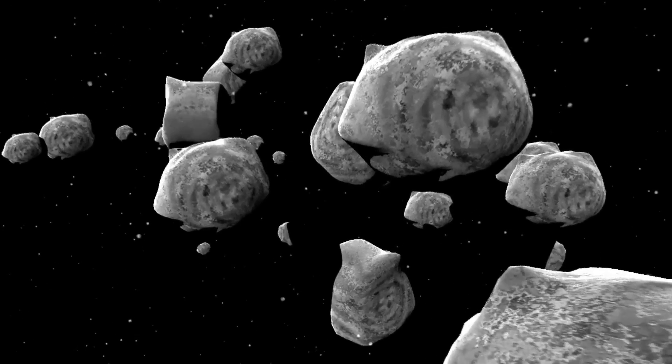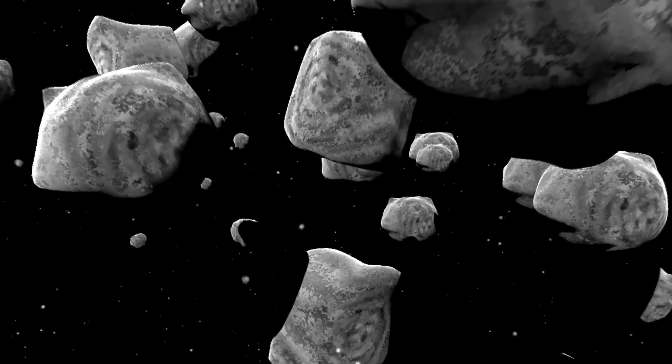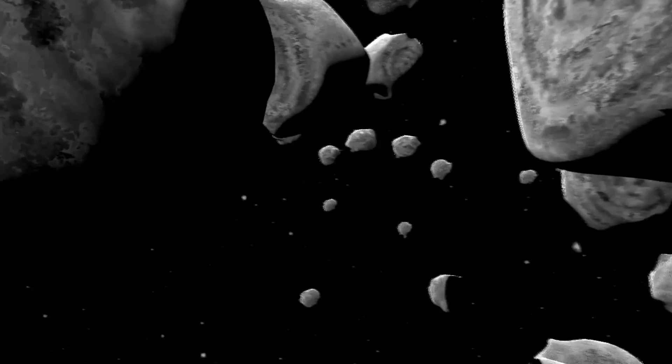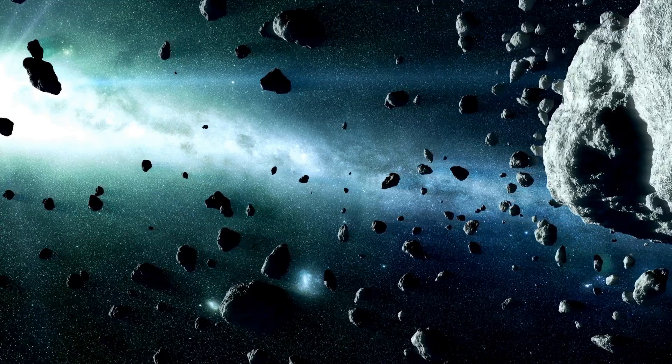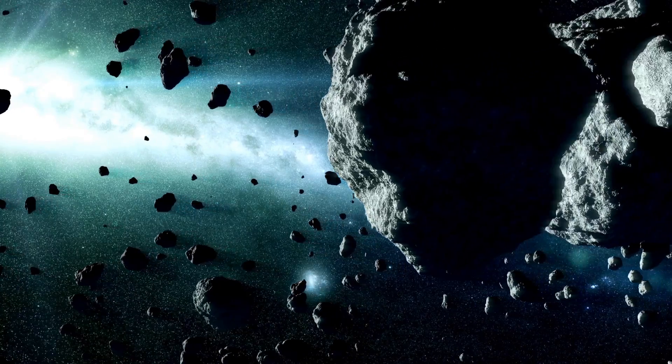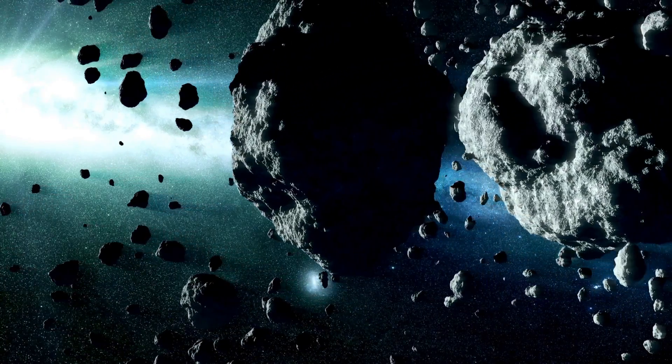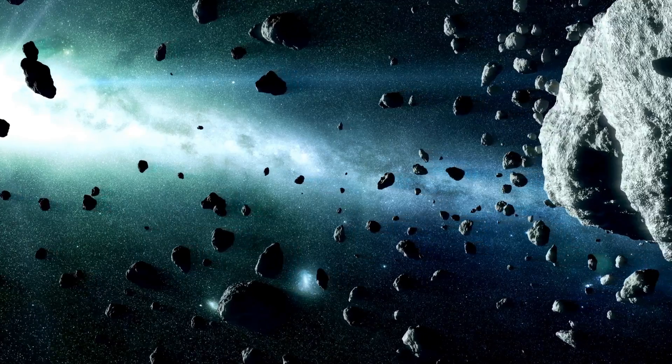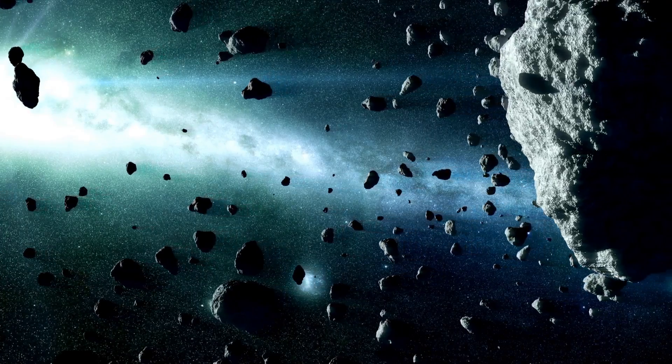This process known as accretion was a key player in the early solar system. It's how tiny dust grains grew into pebbles, pebbles into boulders, and eventually, boulders into planets. Each collision, each clump, added to the growing mass of these celestial bodies. And as these bodies grew so did their gravitational influence.